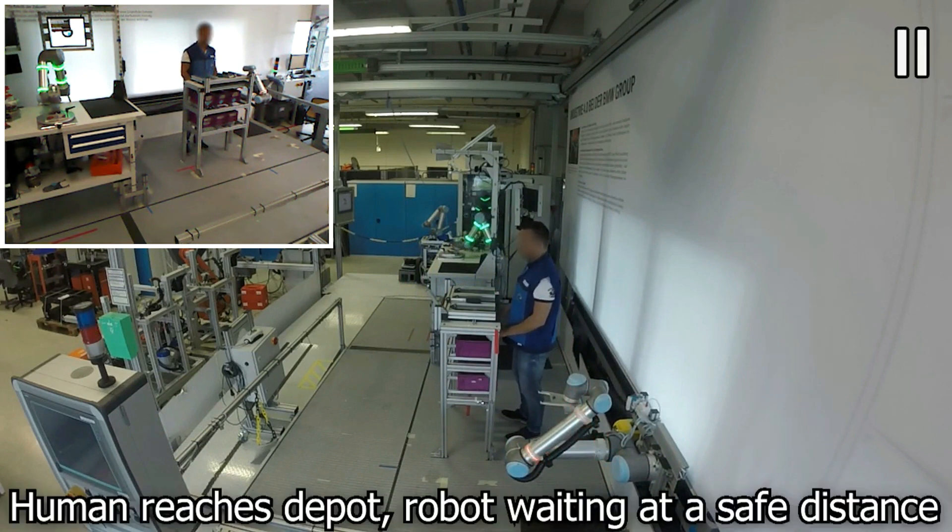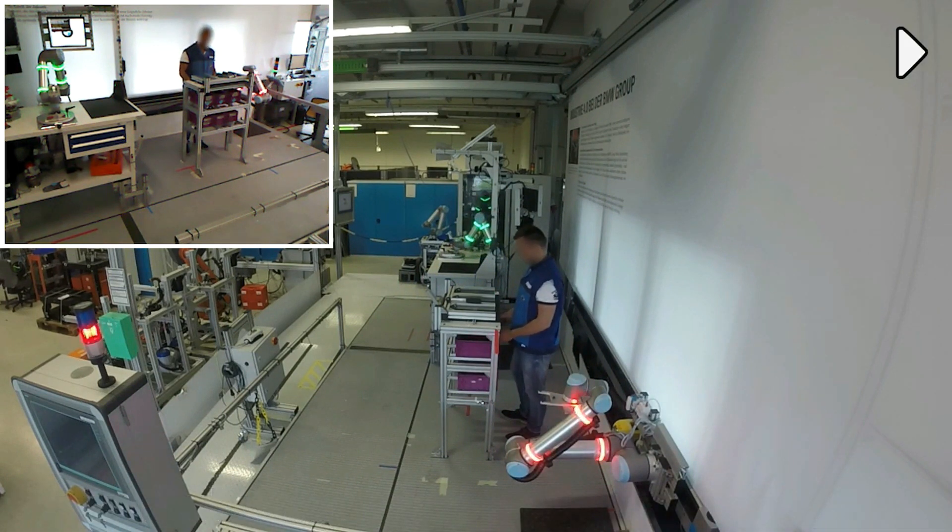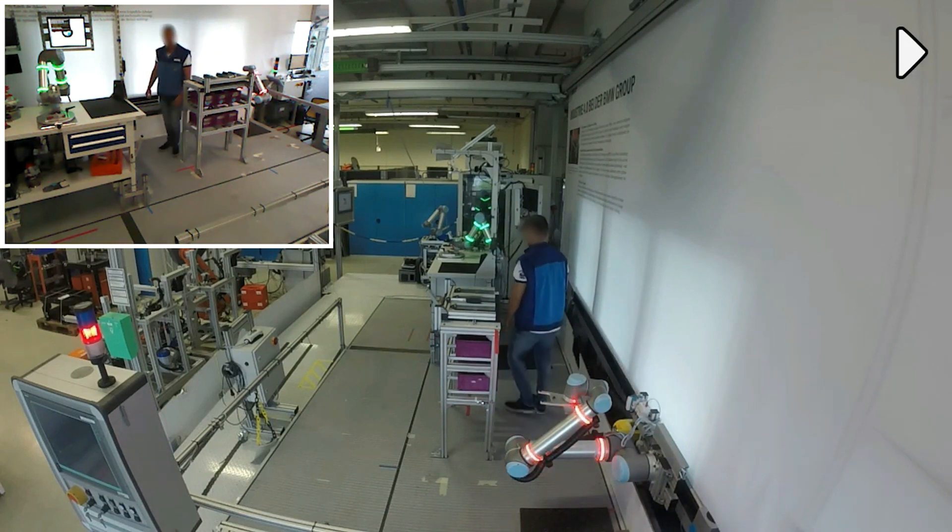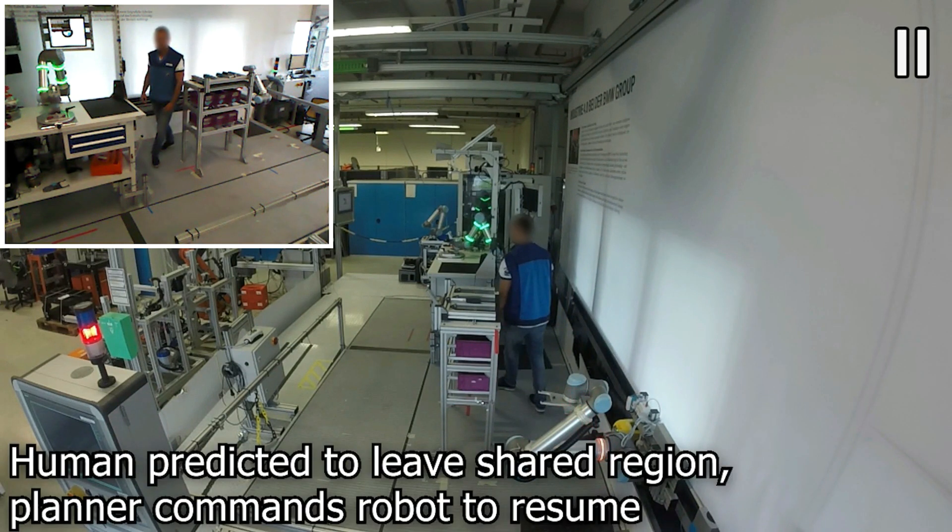Now, the human reaches the depot with the robot waiting at a safe distance. Once the system receives predictions indicating the human is leaving the shared workspace, the planner commands the robot to resume its task.